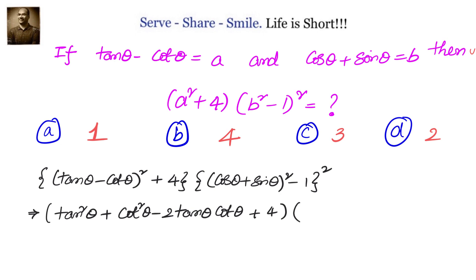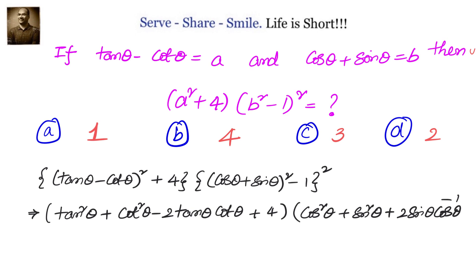Let's expand the next part also. We have (cos θ plus sin θ)² which is cos²θ plus sin²θ plus 2·sin θ·cos θ, minus 1, and we have a whole square on top.